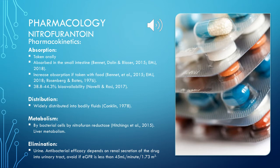Hitchings et al. 2015 and the Joint Formulary Committee 2020 state that antibacterial efficacy depends on renal secretion of the drug into the urinary tract, and therefore advise avoiding nitrofurantoin if the patient's eGFR is less than 45. NICE and Chaplin 2019 advise nitrofurantoin should be used with caution in those with renal impairment. However, Singh et al. 2015 found that mild or moderate reduction in eGFR did not justify avoidance of nitrofurantoin. The patient in this case study has no renal impairment and therefore adequate renal elimination should occur with no dose adjustment required.